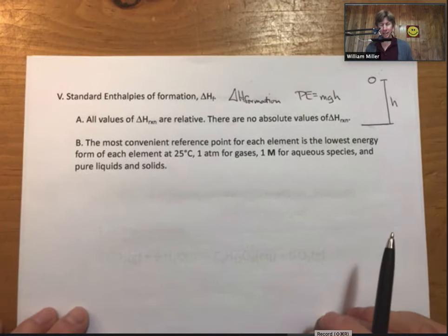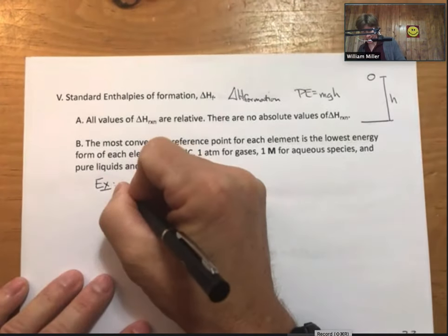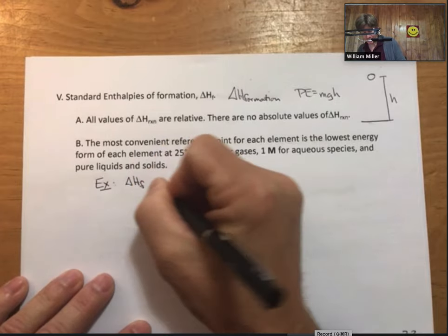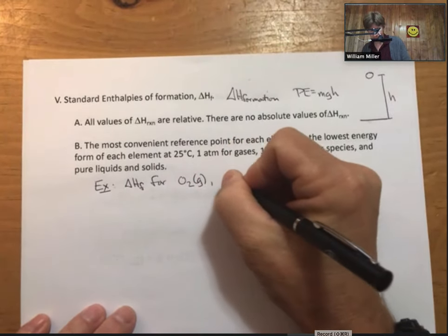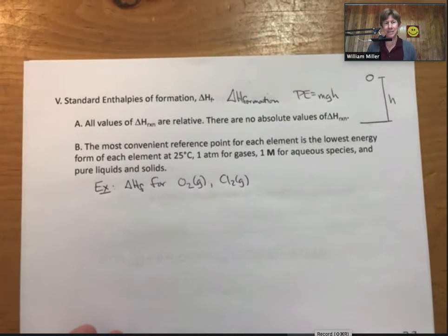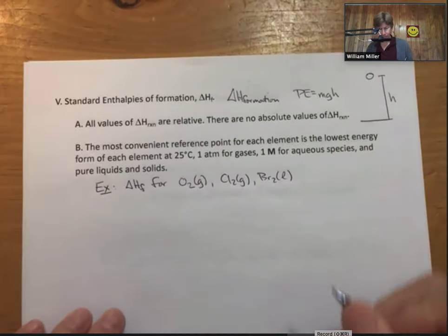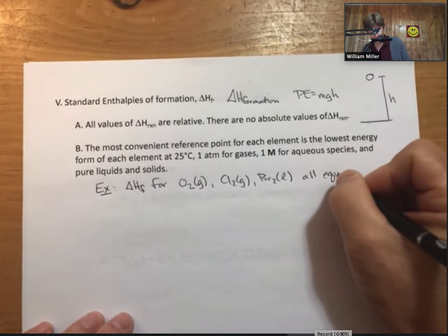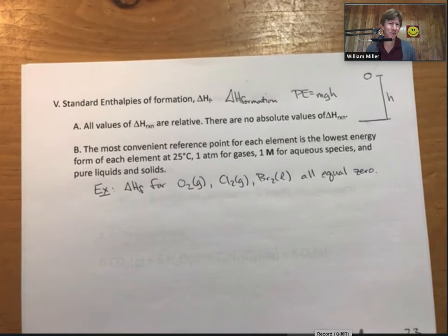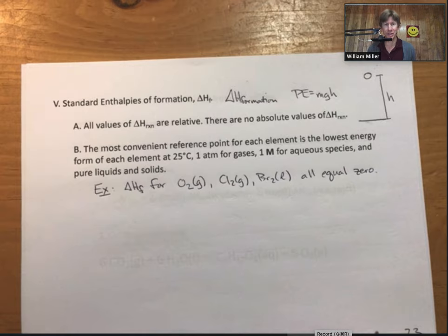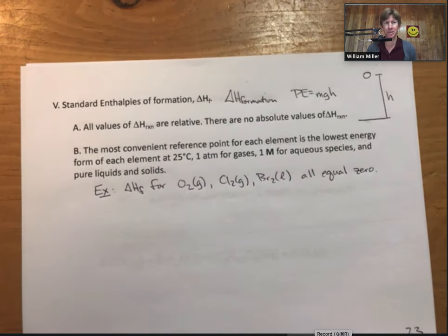What does that mean for us? Well, it means that the Delta H of formation for oxygen gas, chlorine gas, bromine liquid, all equals zero. And that's by definition, meaning they don't have zero potential energy, but we are using that as the floor or the zero point for each of these elements.